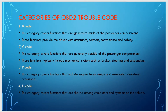The categories of OBD2 trouble codes are divided into B, C, P, and U codes. The B code category covers functions generally inside the passenger compartment, providing the driver with assistance, comfort, convenience, and safety. The C code category covers functions generally outside the passenger compartment, typically including mechanical systems such as brakes, steering, and suspension. The P code category covers functions that include the engine, transmission, and associated drivetrain accessories. The U code category covers functions shared among computers and systems on the vehicle.